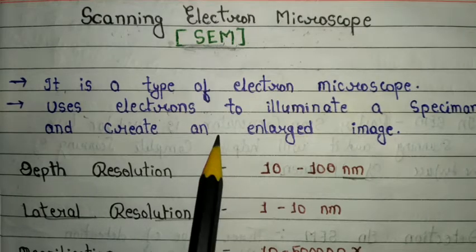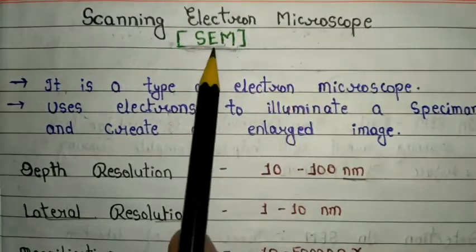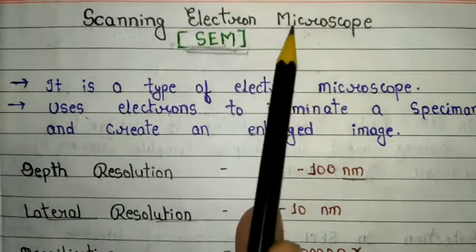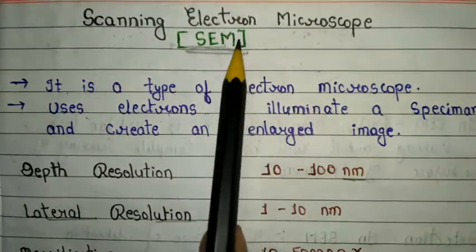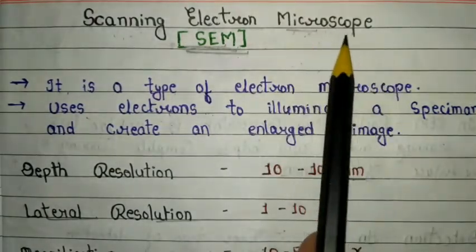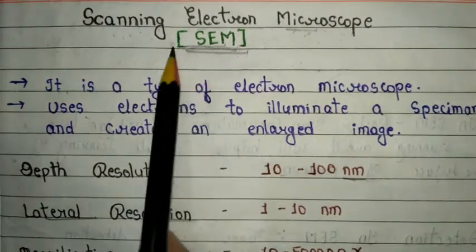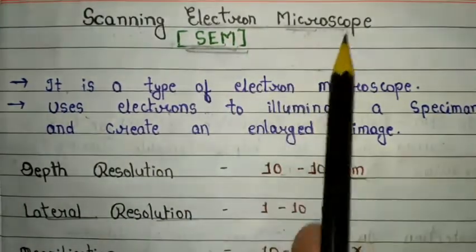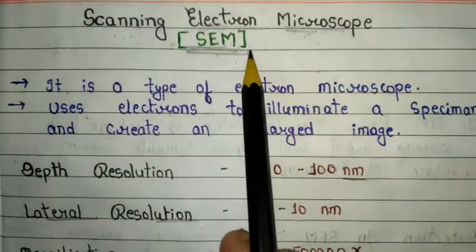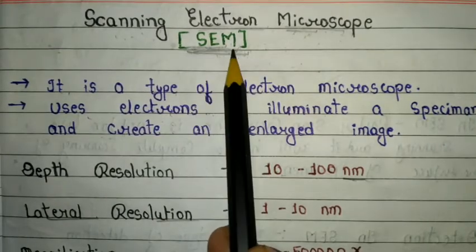Hello everyone, welcome to my channel. In this video we are going to discuss about the scanning electron microscope, also called SEM. Scanning electron microscope is a very important type of electron microscope. In my previous video I completely discussed about electron microscope, so I recommend you go watch that first for better understanding. Electron microscope is basically two types: SEM and TEM — scanning electron microscope and transmission electron microscope. In this video we will completely discuss about SEM.